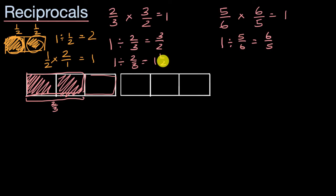So we could say 1 divided by 2/3 is equal to 1 and 1/2. Well, 1 and 1/2 is the exact same thing as 3/2. So once again, you can see that 3/2 times 2/3 is equal to 1, or that 3/2 of a 2/3 fit into 1.